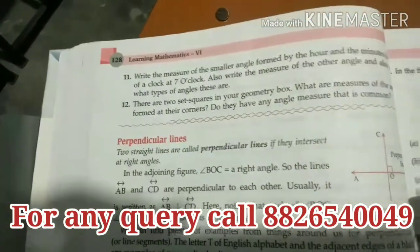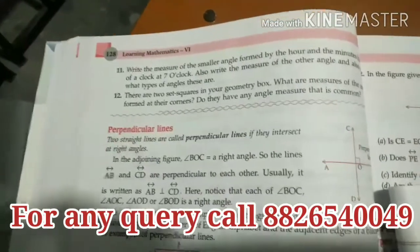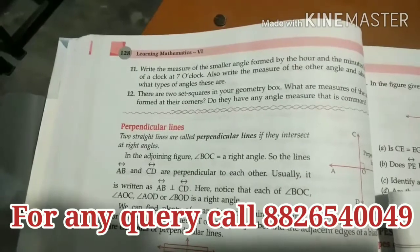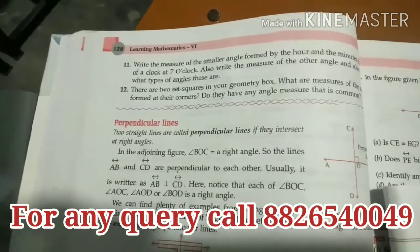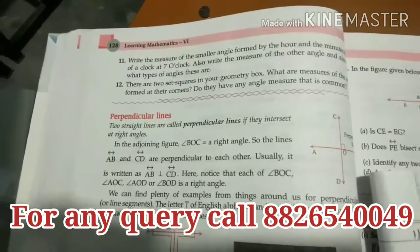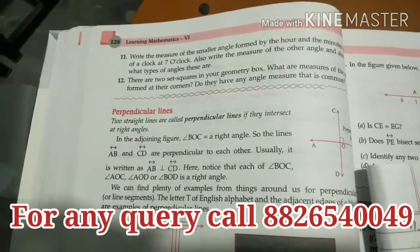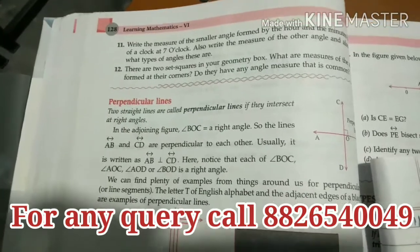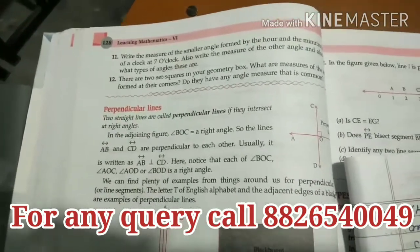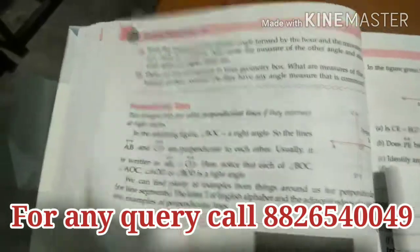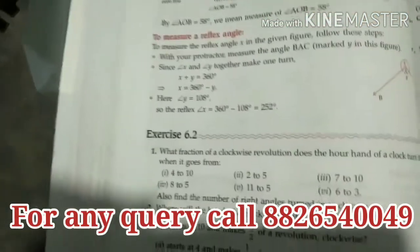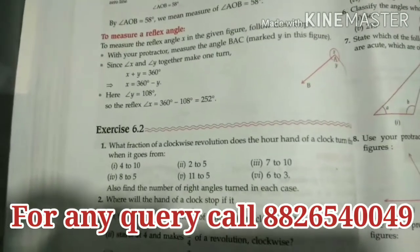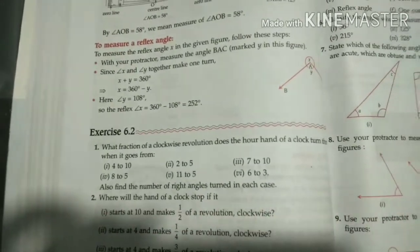Question 12: in your geometry box, there's a set square. Draw it in your copy and measure the angles, then write their values. Find out both angles. Thus your Chapter 6.2 is finished. If anyone is having problems, you can watch the video two or three times. Thank you, have a nice day.